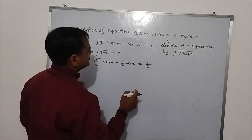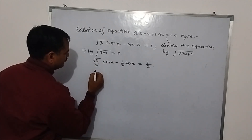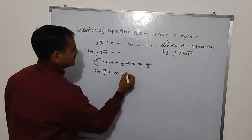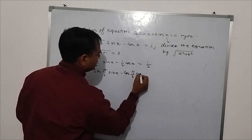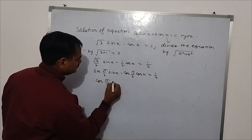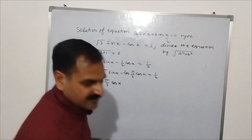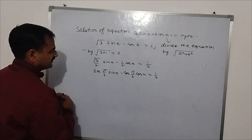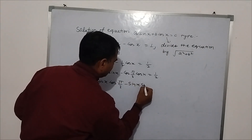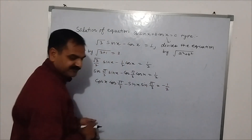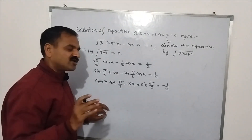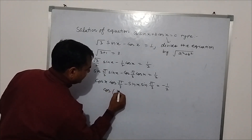Now we write this as: (√3/2) sin x minus (1/2) cos x equal to 1/2. Now, √3/2 is the value of sin(π/3), and 1/2 is the value of cos(π/3). So we write: sin(π/3) sin x minus cos(π/3) cos x equal to 1/2. Taking minus common, this becomes: cos(π/3) cos x minus sin(π/3) sin x equal to minus 1/2. Since cos A cos B minus sin A sin B equals cos(A+B), this value equals cos(x + π/3).